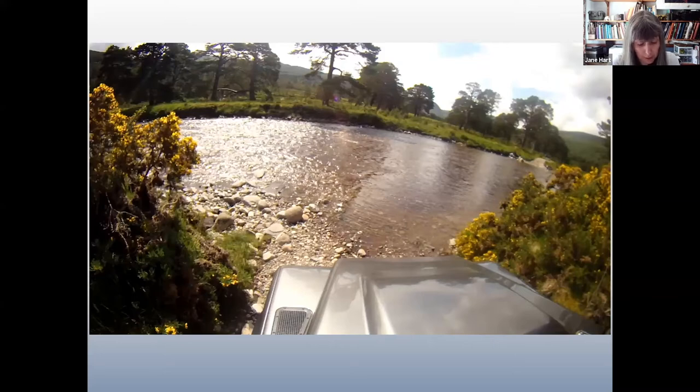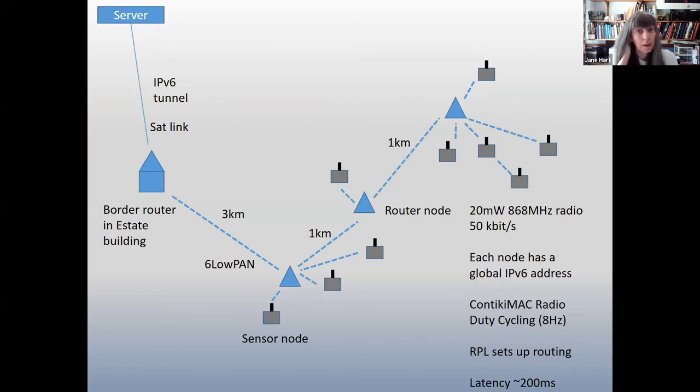But once you could cross the ford, you could drive to the surface. And it's right up on the plateau. So this is a view of the system. This is a plan view. So essentially, we have a series of nodes in the landscape. But this time, each node has this global IP address. So basically, it has its own website. These talk to each other to a local base station, which we call on this diagram a router node. And these router nodes were approximately a kilometre apart, they talk to each other. And then they were able to talk by 6LoWPAN down to the estate building. And that was a three kilometre reach. And in the estate building, there's electricity.